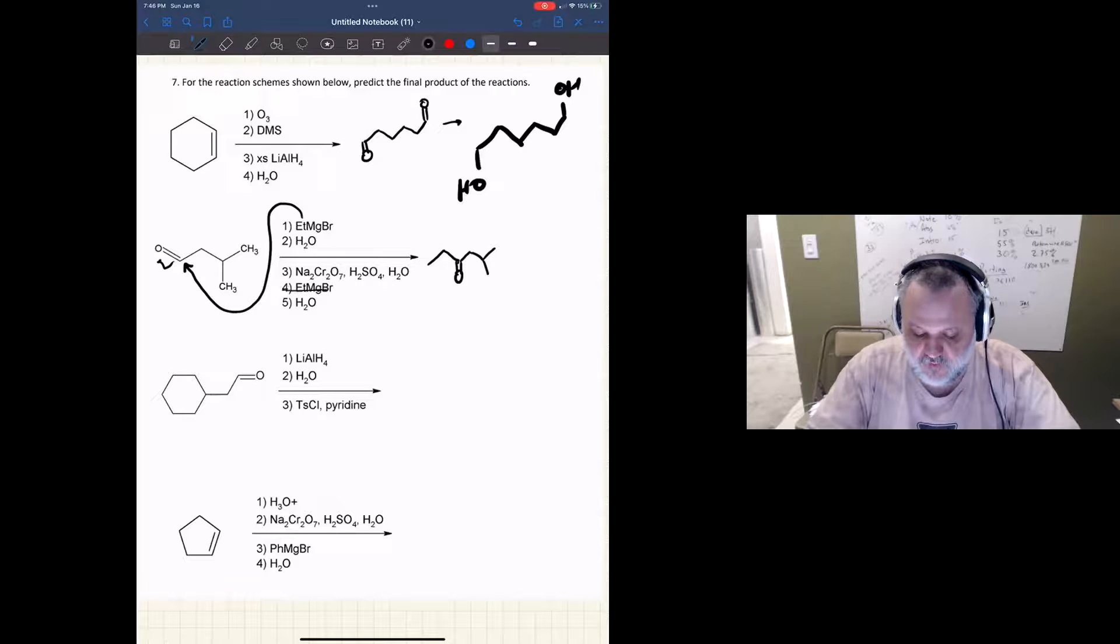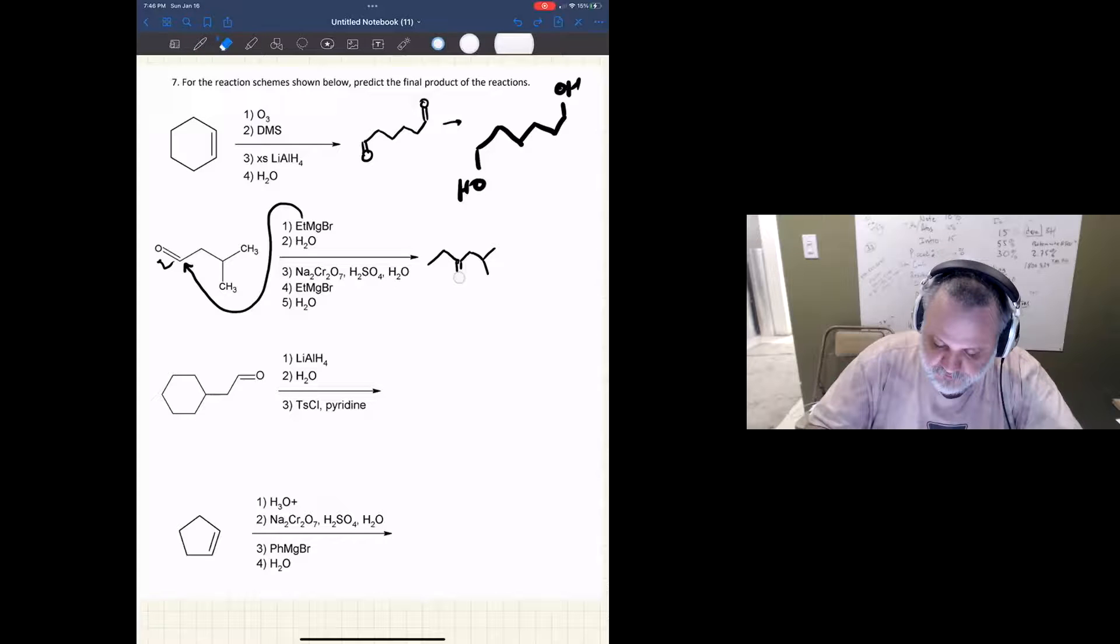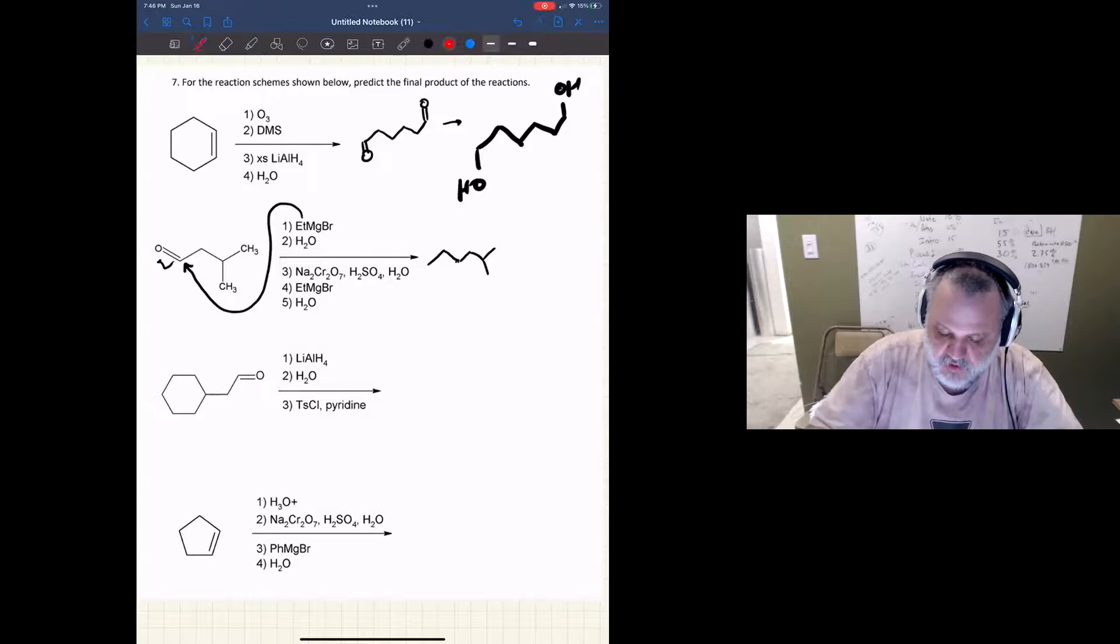Now I'm going to do Grignard again for that carbonyl group, and so that means I'm going to add yet another, and this time it is still an ethyl group, so I'm going to add another ethyl group, and it's going to finish off as an alcohol. And so this is my final product.